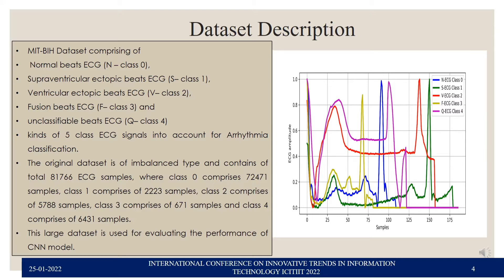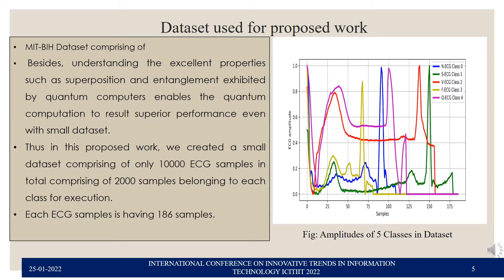The dataset considered for this proposed work is obtained from the MITBIH PhysioNet database, which comprises an arrhythmia dataset collection of five different classes. This is a large dataset convenient for classical CNN-based classification. However, for our proposed work, we considered taking a smaller-sized dataset, which will be discussed in the next slide. We converted the imbalanced MITBIH dataset into a balanced dataset with a minimum number of samples.